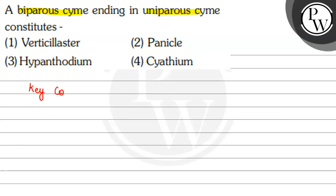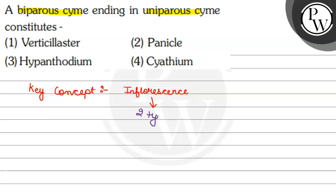So, in this question, what is our key concept? The key concept is inflorescence. Inflorescence means the arrangement of flowers on the floral axis. And inflorescence is mainly of two types.